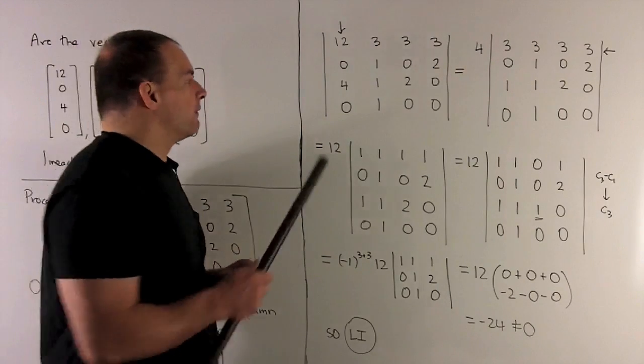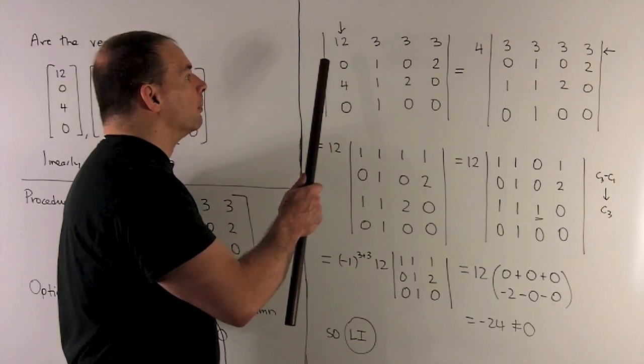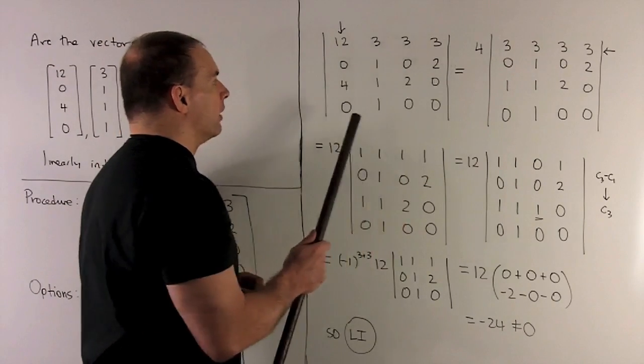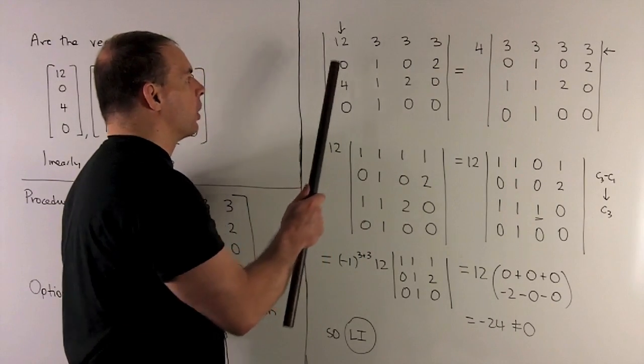First operation, I'm going to factor a four out of column one. So I'll bring the four in front, and then this is going to turn into three, zero, one, zero.